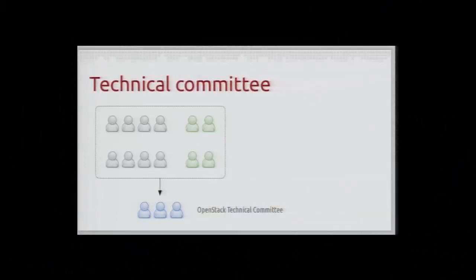But then all the contributors to all the programs have a voice in electing the technical committee. The technical committee is in charge of cross-project policy, selecting new programs, accepting new project incubation, and when they're mature enough, making them part of the integrated release. The TC also acts as an appeals board for any decision that couldn't be solved at program level — basically the PTL can solve issues within a project, but once an issue becomes cross-project, it will have to be resolved by the TC.